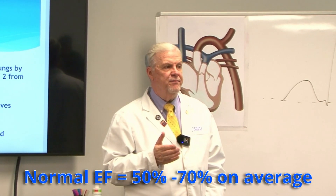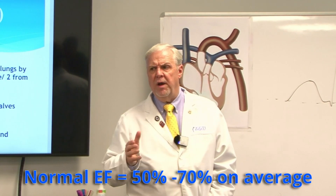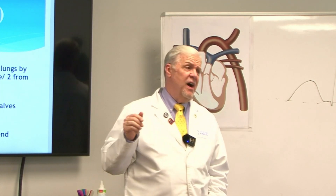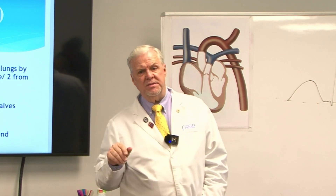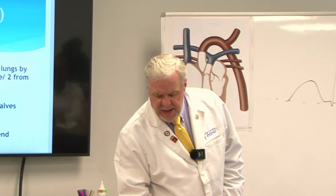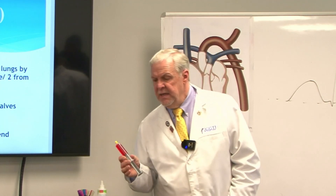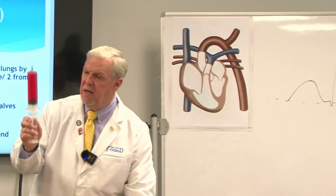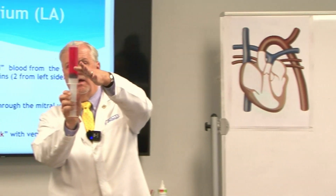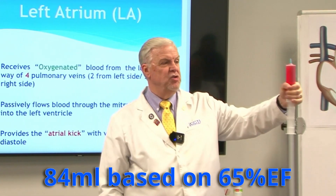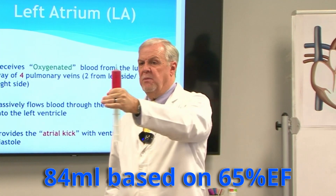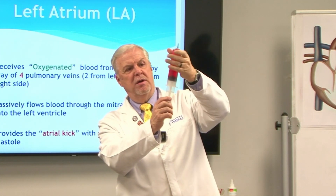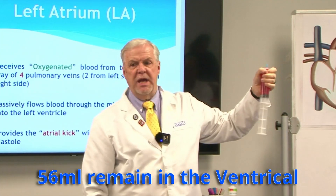Ejection fraction varies from 50 to 70 percent according to the American Heart Association. At 65%, which was my own last measured value, that's roughly this much getting pumped out per ejection — meaning this much remains in the chamber after each beat.